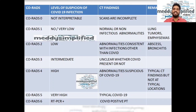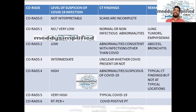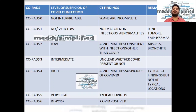CORADS 4 is high suspicion of having COVID-19 infection. The typical CT findings for COVID-19 are present, but not at a typical location. In CORADS 5, which is very high suspicion, the typical COVID-19 abnormalities are multifocal and widespread. In CORADS 4, the lesions are unifocal — present on one side — whereas if they are multifocal, we call it CORADS 5, indicating very high suspicion that the patient has COVID-19.